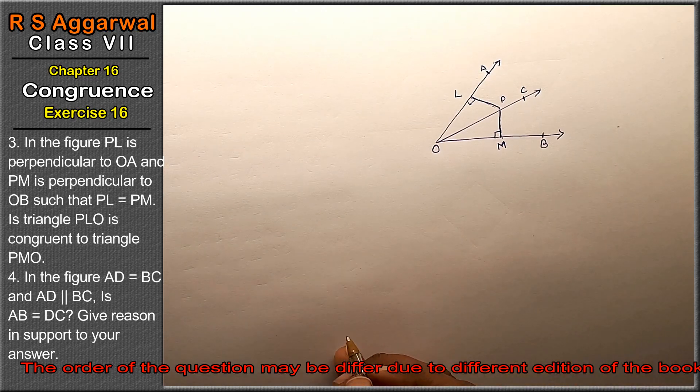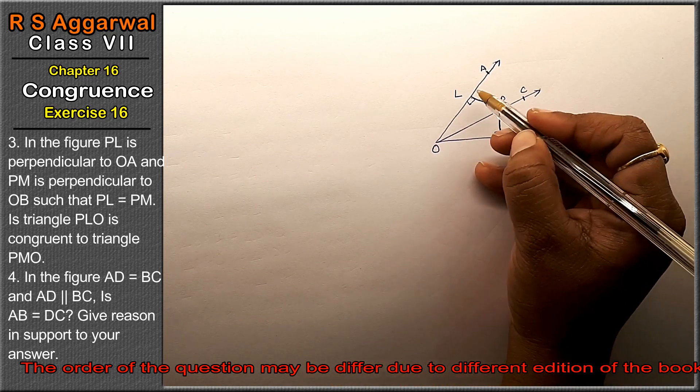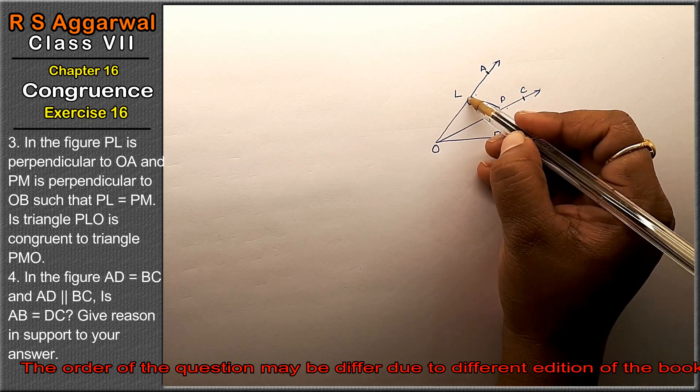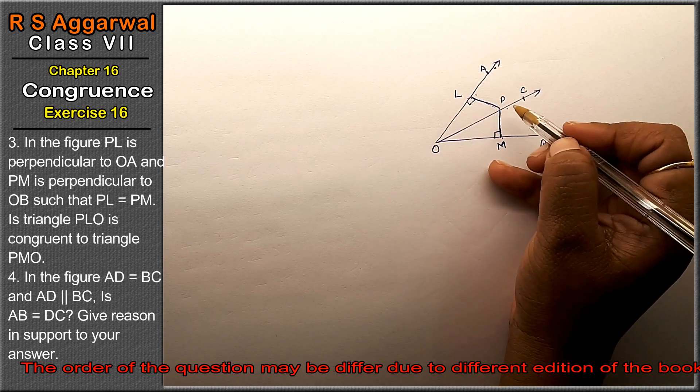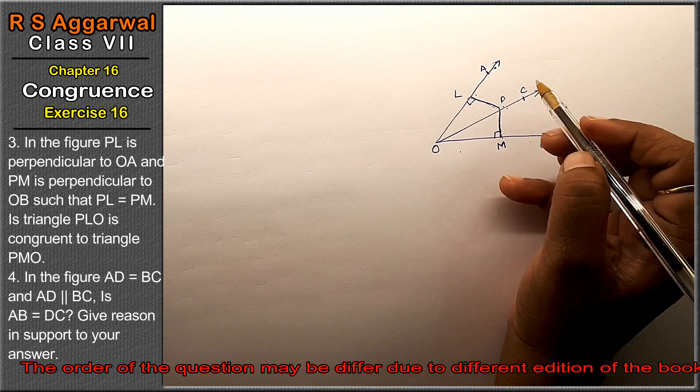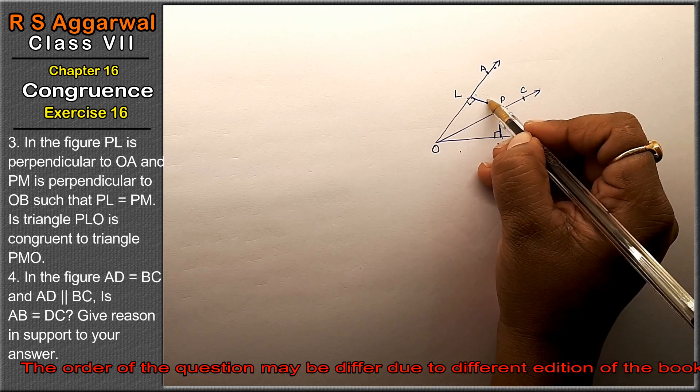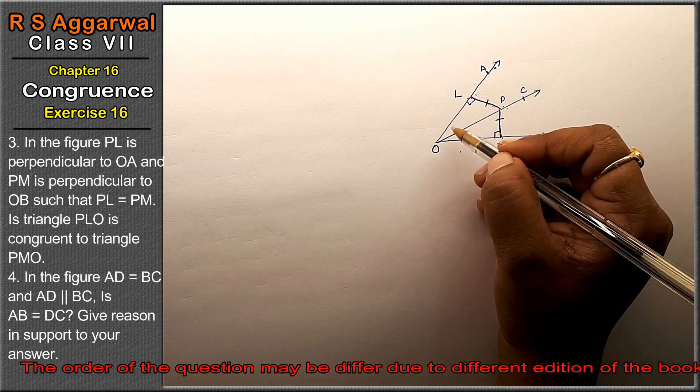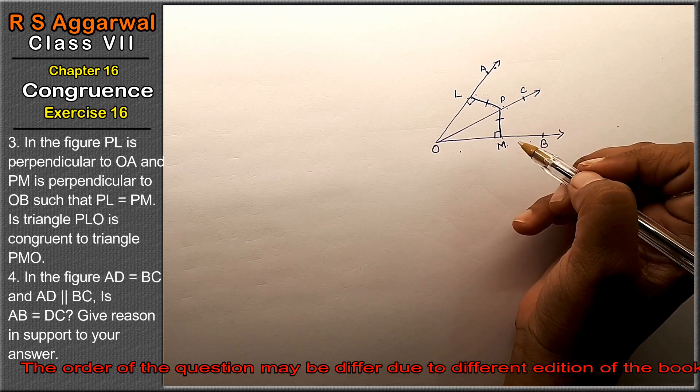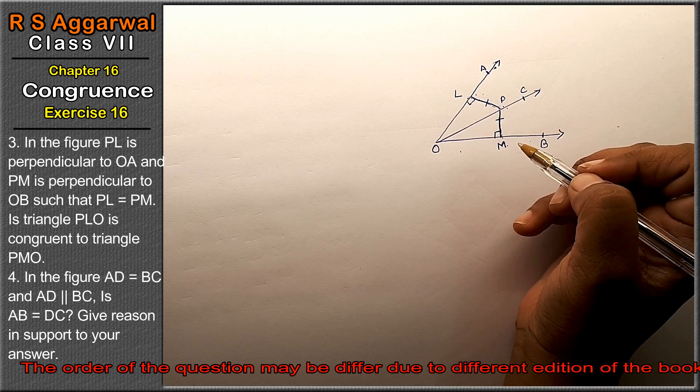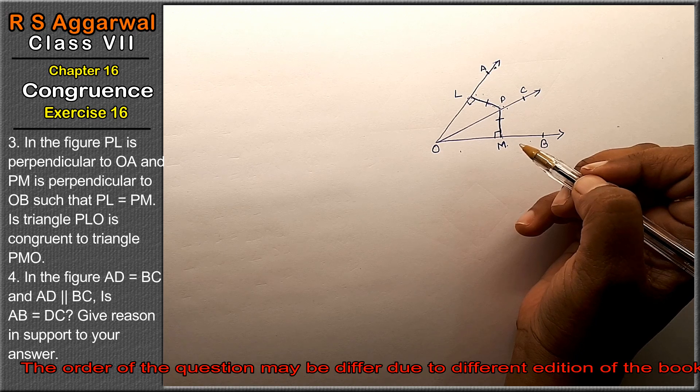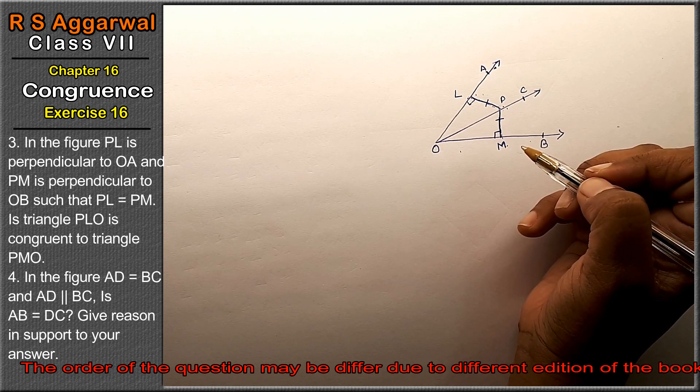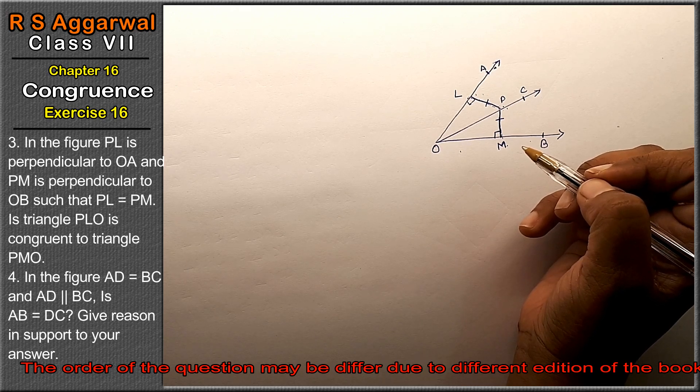We have P here, L here, M here, and a 90 degree angle given. What do we need to do? PL is perpendicular to OA, and PM is perpendicular to OB such that PL equals PM. We need to prove that triangle PLO is congruent to triangle PMO and give reason to support your answer.